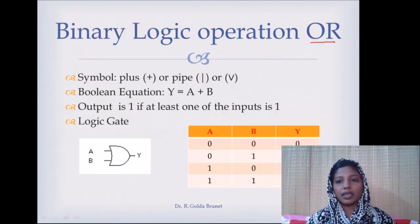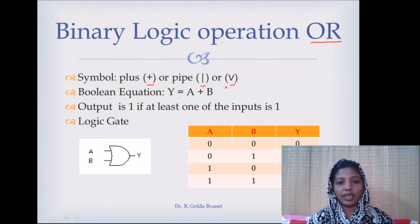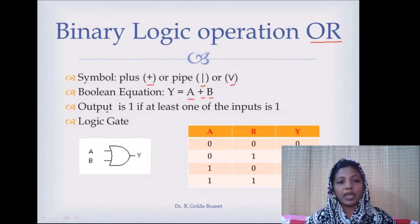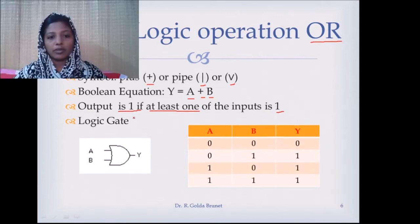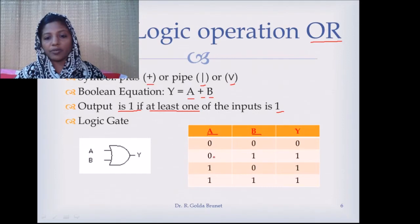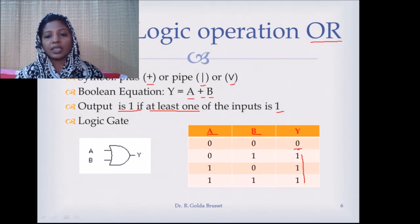The next operation is the OR operation. We represent the OR operation with a plus symbol, a vee symbol, or a disjunction symbol. The Boolean expression is: output Y is equal to A OR B, and the output is 1 if at least 1 of the inputs is 1. If all inputs are 0 then the output is 0.